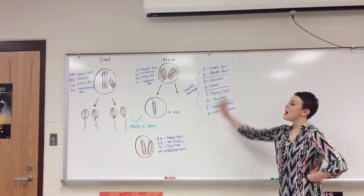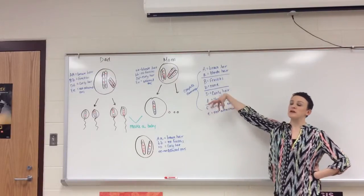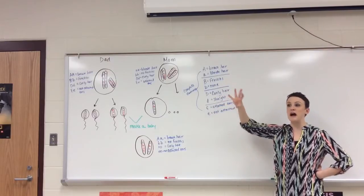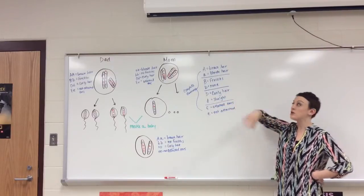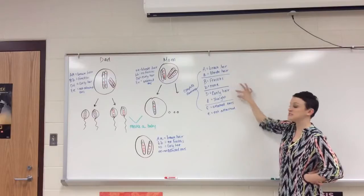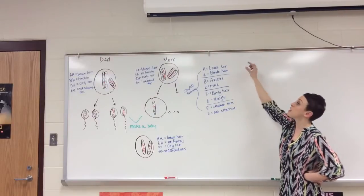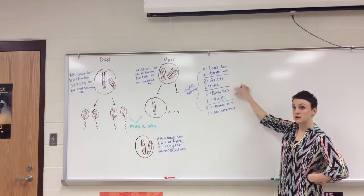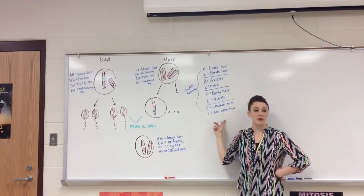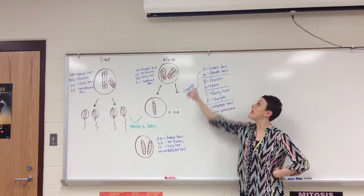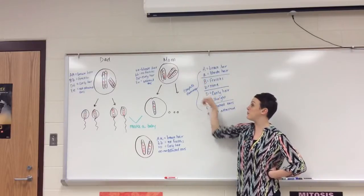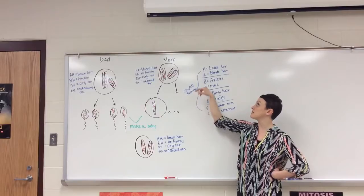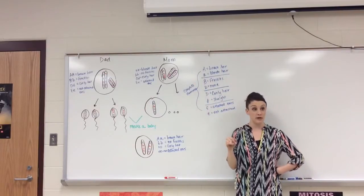I drew up here a picture so that we could take a look at segregation and alleles and how you got your alleles from your parents. First thing I did was I defined three different traits: hair color, freckles, hair type, and whether or not your earlobes are attached. Everything next to the big letter is the dominant trait, and everything next to the little letter is the recessive one.